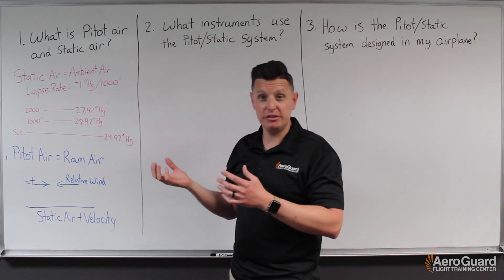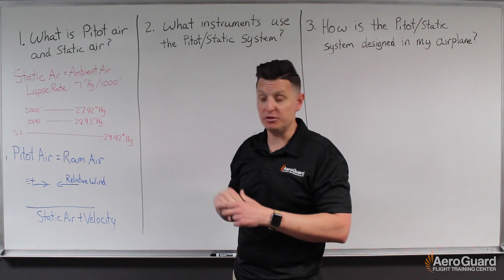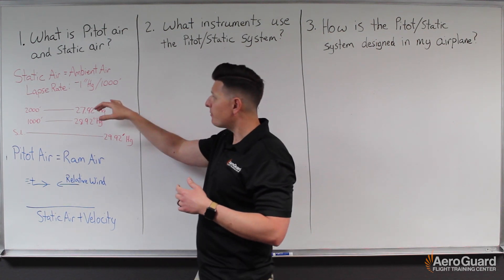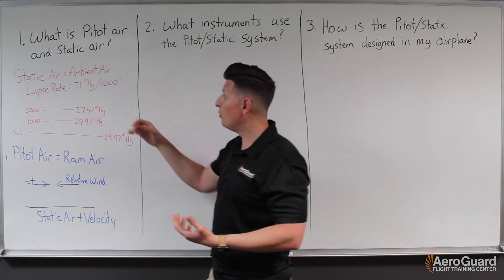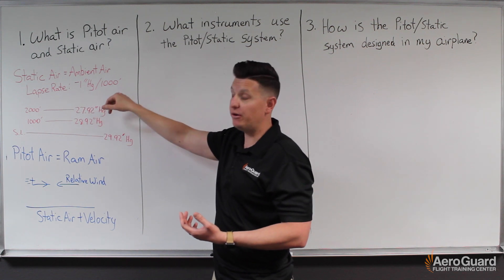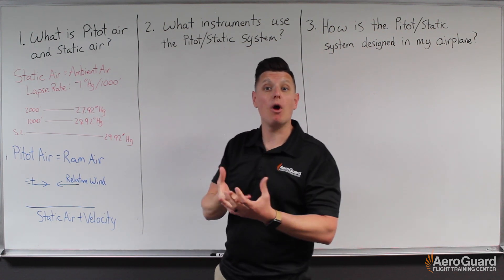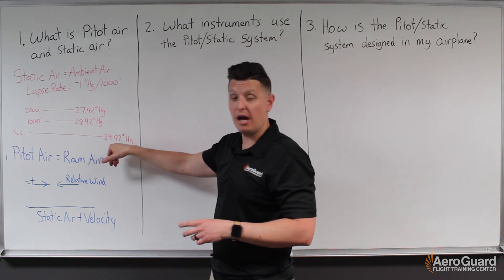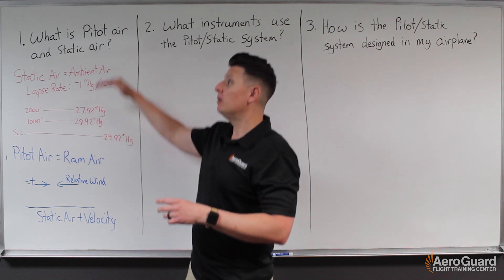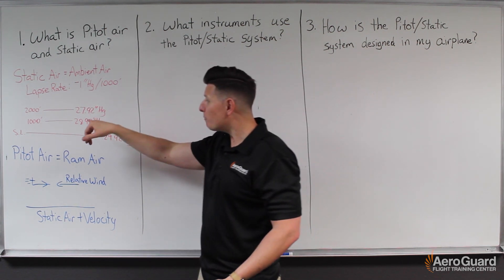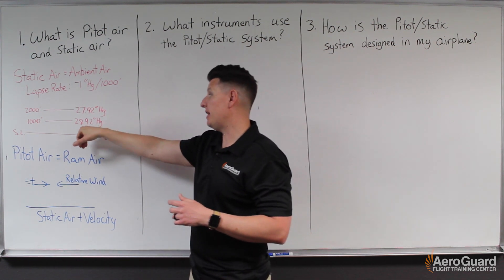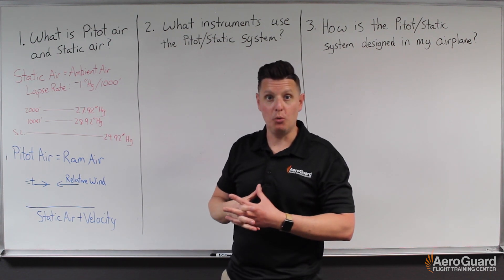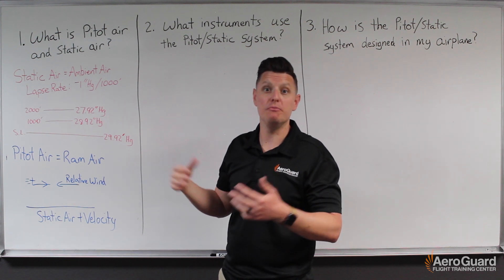That pressure changes at a relatively consistent rate, at least at lower altitudes, which helps us ultimately calculate our altitude. The static air follows what is known as a lapse rate, measured at approximately one inch of mercury per thousand feet. To put that into perspective, if we had a barometer at sea level, the standard sea level pressure is 29.92 inches of mercury. If we then climbed a thousand feet, we would see that pressure would be relatively close to 28.92 inches of mercury, and so on. This is valuable information, as we can have a device that can calculate our change in altitude or know what our altitude would be.